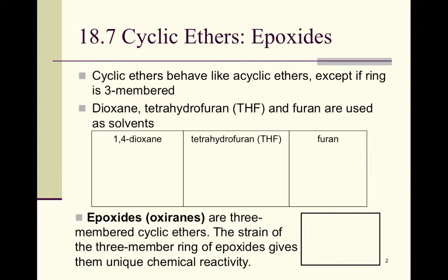We're going to start off this section talking about cyclic ethers, including epoxides. Cyclic ethers are part of our heterocyclic compounds — we're going to have both carbon and oxygen within the ring itself. Cyclic ethers pretty much behave like acyclic ethers; they're very unreactive, and so they tend to be used as solvents. The exception are epoxides, those three-membered rings, and we'll take a closer look at those.